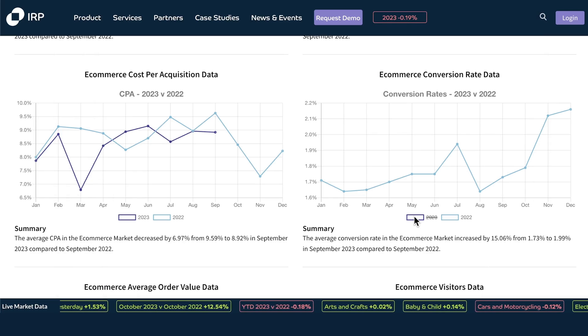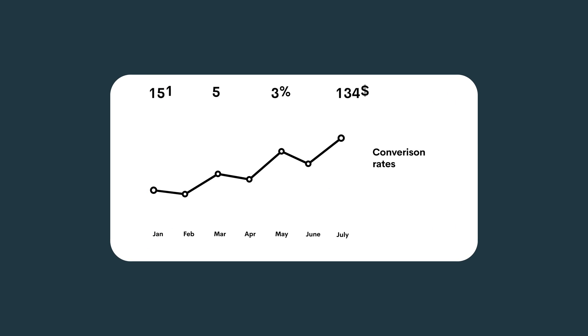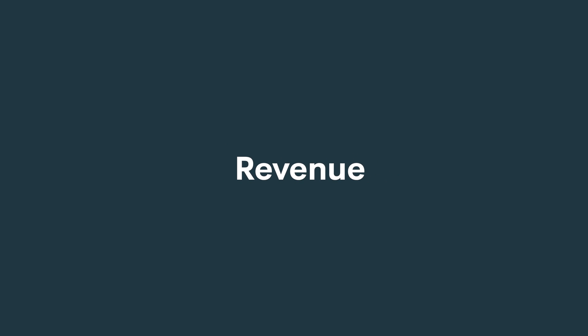While the average conversion rate for the overall e-commerce market sits at just under 2%, a good conversion rate on Etsy can vary significantly across categories. Conversion rates typically lie between 1% and 5%, with 2% to 3% being the average on Etsy. Revenue is the total sales of all your orders minus any discounts you gave, and doesn't include selling fees, shipping costs, or orders that were refunded or canceled.